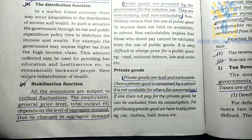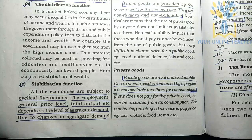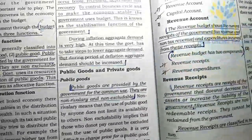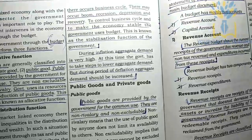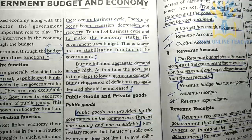Next is the stabilization function. In the economy there are cyclical fluctuations — depression, boom, recession, and recovery stages. To control the business cycle and make the economy stable, the government uses the budget. This is the stabilization function.